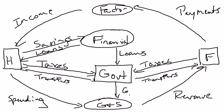So that means ultimately those loans are financed by the savings of some households out there, whether they're households in the United States or — technically — savings from other countries. The big three countries that the United States borrows from are China, Japan, and Great Britain. So it could be households in those countries that are ultimately funding the government spending as well. That's just a brief breakdown of the government's role. In the next short video, we'll go ahead and talk about fiscal policy.